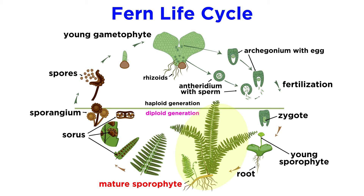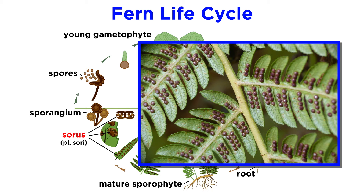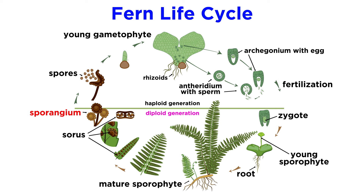In ferns, like lycophytes, the diploid sporophyte is the dominant generation, or the generation that we're most aware of seeing. If you look at the back or undersides of the megaphils on a fern sporophyte, you'll often see small brown or black dots in neat rows. These brown dots are sori, or groups of sporangia where the haploid spores are produced through meiosis.